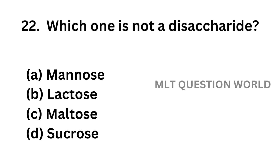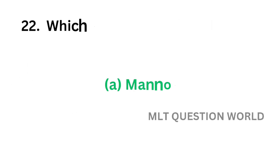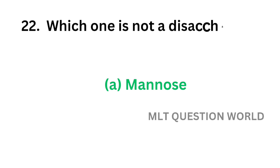Question number 22. Which one is not a disaccharide? Option A, Mannose; option B, Lactose; option C, Maltose; option D, Sucrose. The correct answer is option A, Mannose. Mannose is not a disaccharide but it is a monosaccharide.